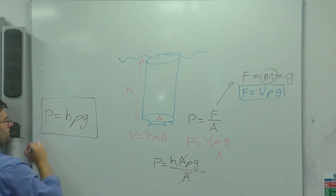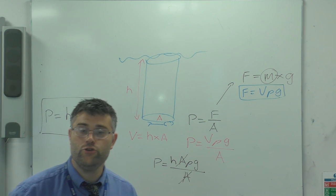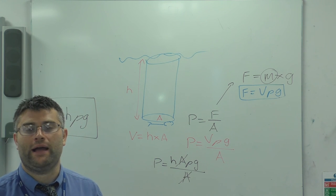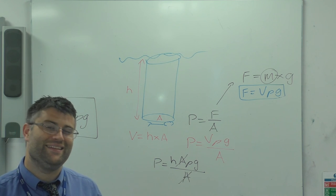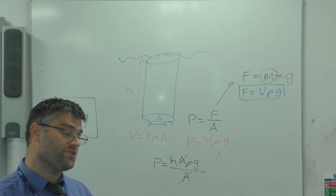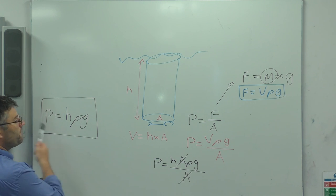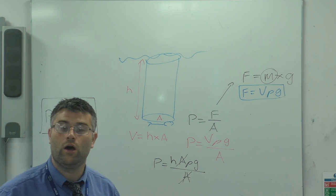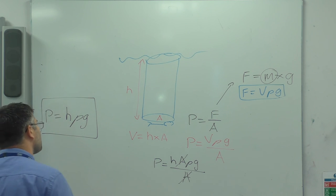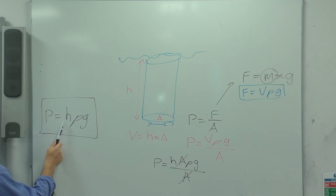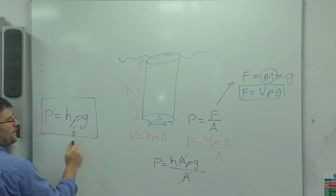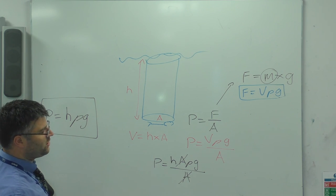Now that is brilliant because all I need to know about my predicament is how deep I am under the water, the density of the liquid that I'm in, and the constant gravity, and that will allow me to work out the pressure that I would feel under the water regardless of my size. So we're going to feel the amount of pressure based on the depth of the water, the H, the density and gravity as a constant.